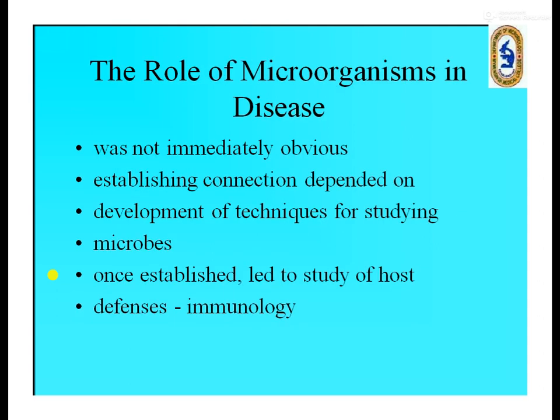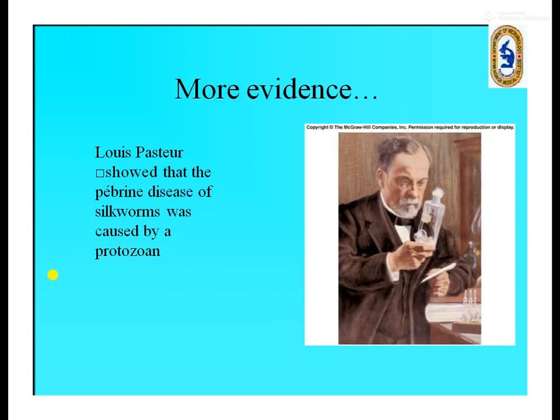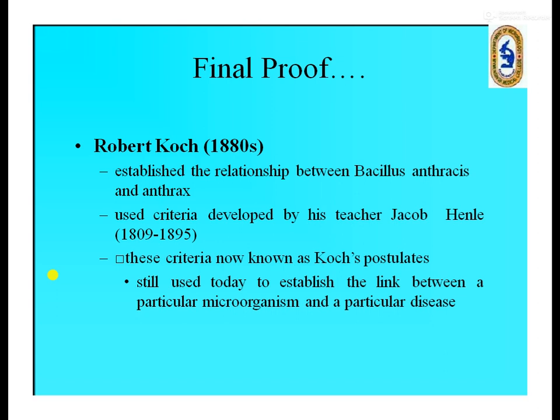These topics are not in your syllabus, so we are not going to study them in detail. Louis Pasteur showed that the pebrine disease of silkworm was caused by protozoa. Robert Koch established the relationship between Bacillus anthracis and anthrax — he postulated that anthrax was caused by Bacillus anthracis. He used criteria developed by his teacher Jacob Henle. These criteria, now known as Koch's postulates, are still used today to establish the link between a particular microorganism and a particular disease.